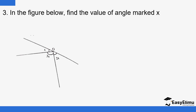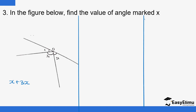Similarly, we do the next one the same way. We have X plus 3X plus 2X plus 2X equals 180 degrees. Combining like terms gives us 8X equals 180 degrees. Dividing both sides by 8, X equals to — we divide both sides by 6 and get X equals to 30 degrees.